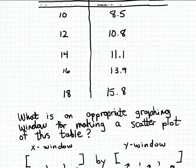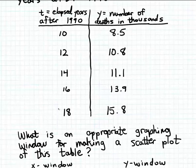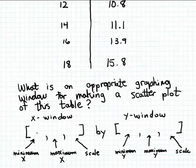Looking at the table again, the T values — elapsed years after 1990 — will be plotted along the X axis, and the Y values — deaths in thousands from Hepatitis C — along the Y axis. The smallest T value in the table is 10 and the largest is 18. So we need the minimum X value in our window to be no more than 10, and the maximum to be no less than 18.